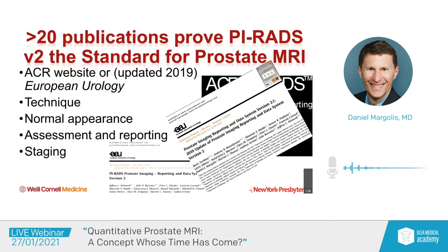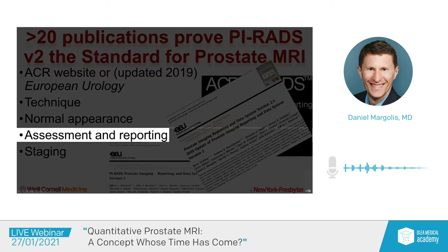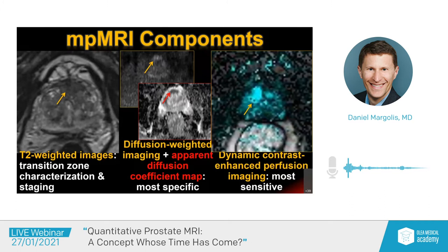There are different components that we need to assess and report. The T2-weighted images are most useful for the transition zone characterization and for staging — determining whether the cancer is organ-confined or not. Diffusion-weighted imaging with the apparent diffusion coefficient map is the most specific component. The high B-value is a crucial part of diffusion-weighted imaging.